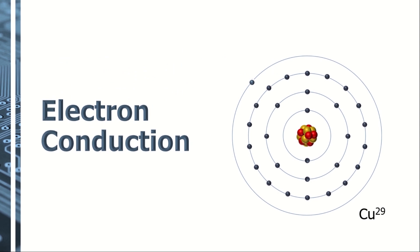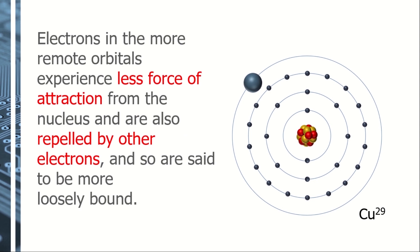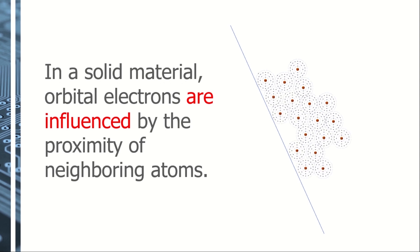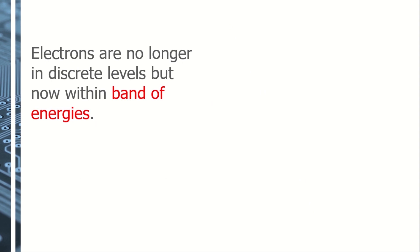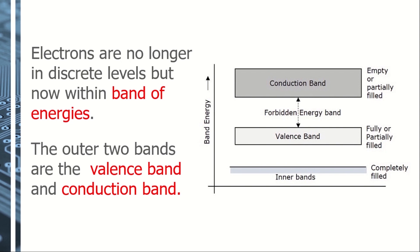Remember that the same principle of electrostatics applies to charged particles: unlike charges attract, like charges repel. Therefore, electrons in the more remote orbitals experience less force of attraction from the nucleus, and are also repelled by other electrons, and so are said to be more loosely bound. Furthermore, in a solid material, where atoms are compact and closer together, orbital electrons are influenced by the proximity of neighboring atoms. In this condition, electrons are no longer in discrete levels, but now within bands of energies. The outer two bands are the valence band and conduction band.